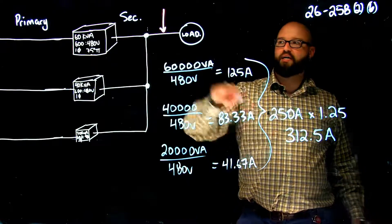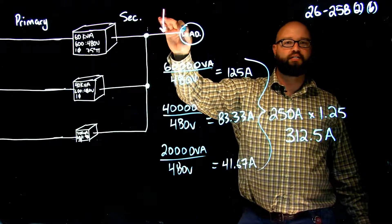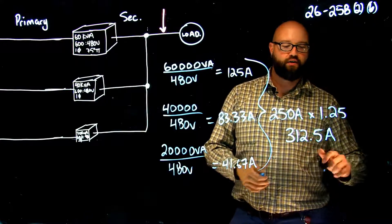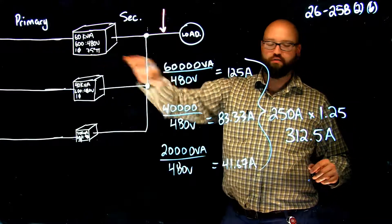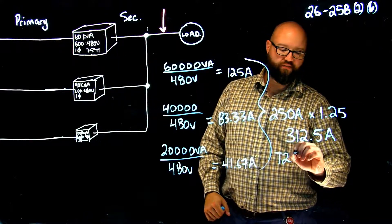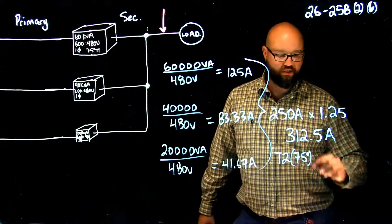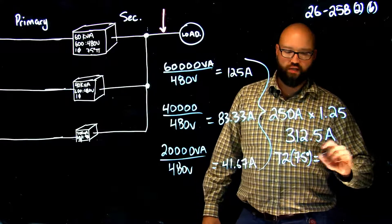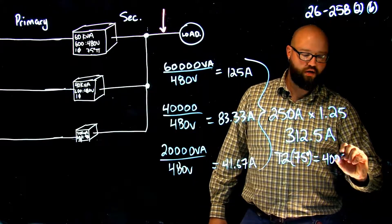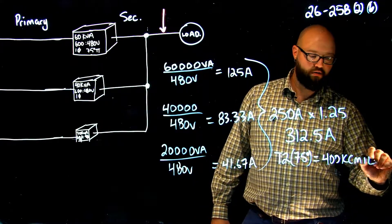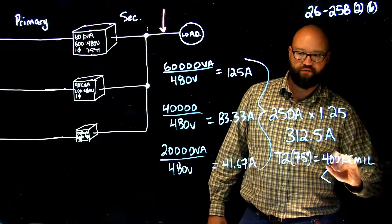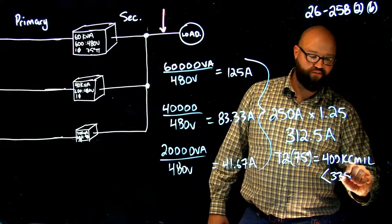That is the minimum size that this conductor right here can be, that's the minimum ampacity of this conductor. Again we're going to take this to table 2, 75 degree column, because I'm given this 75 degree termination, and we are going to choose a 400 kcmil with an ampacity of 335 amps.